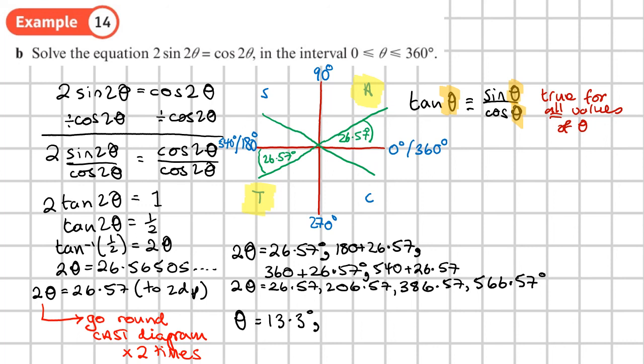Three significant figures or one decimal place is fine. So then the next one, 206.57 divided by two becomes 103.3. Then the 386 divided by two becomes 193.3. And then the last one, the 566 divided by two becomes 283.3. So these are our final solutions.